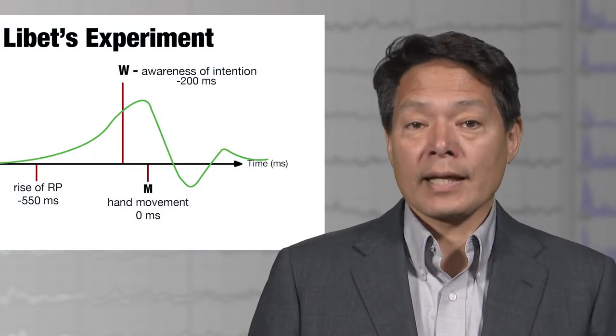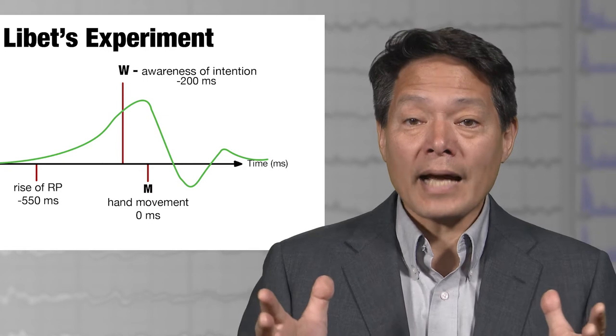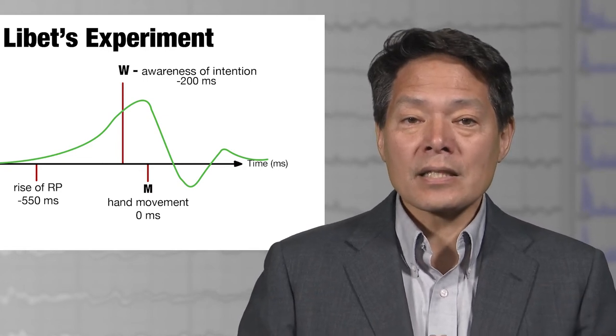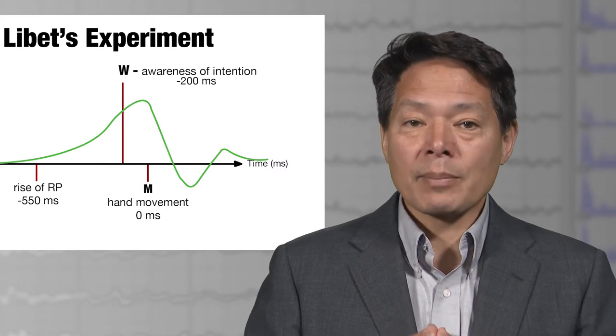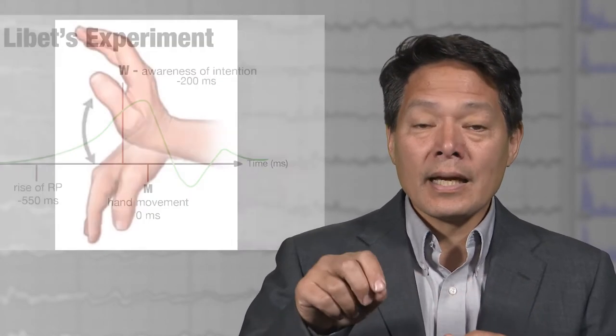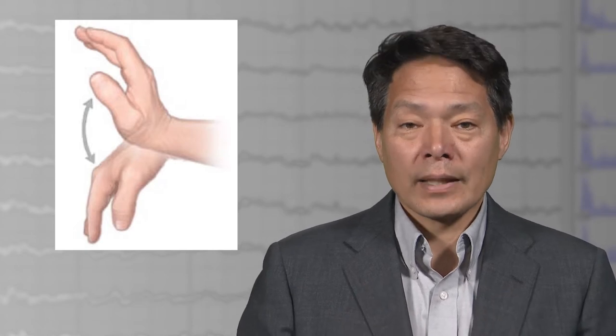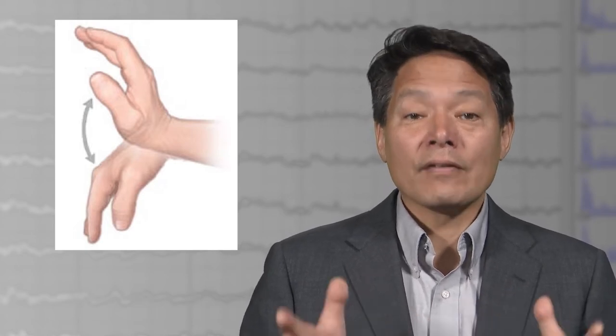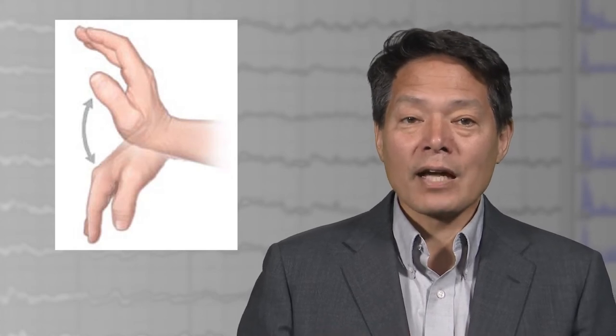Libet made the very strong claim that preceding unconscious computations cause all human actions. He did this on the basis of an unsurprising finding, namely that conscious willing is preceded by brain activity in one tiny domain of human action, namely meaningless, repetitive, and inconsequential hand movements. And generalized this to the claim that the conscious feeling of willing is not the cause of any of our actions in any domain of human action or decision making. That's a pretty brave and I think unfounded, even reckless overgeneralization.